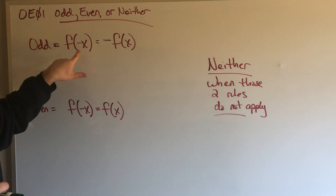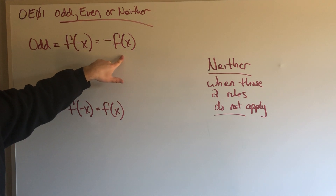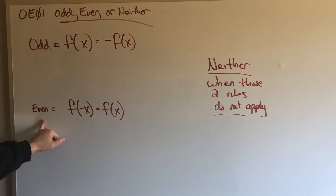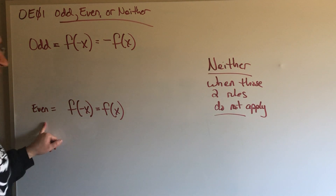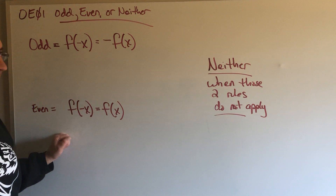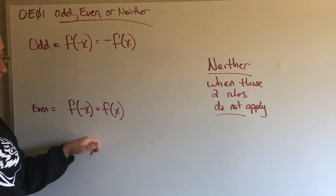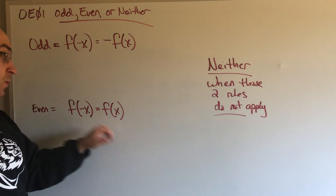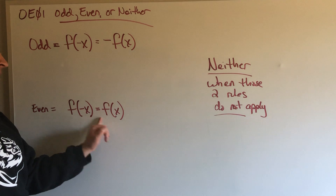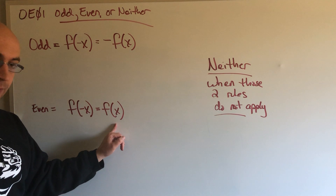So I would replace x with negative x, and if it equaled negative f of x, then it would be odd. The function would be classified as even — and this is the easier one — if I were to replace every x value in that equation with a negative x, and it equaled just whatever the function started with.